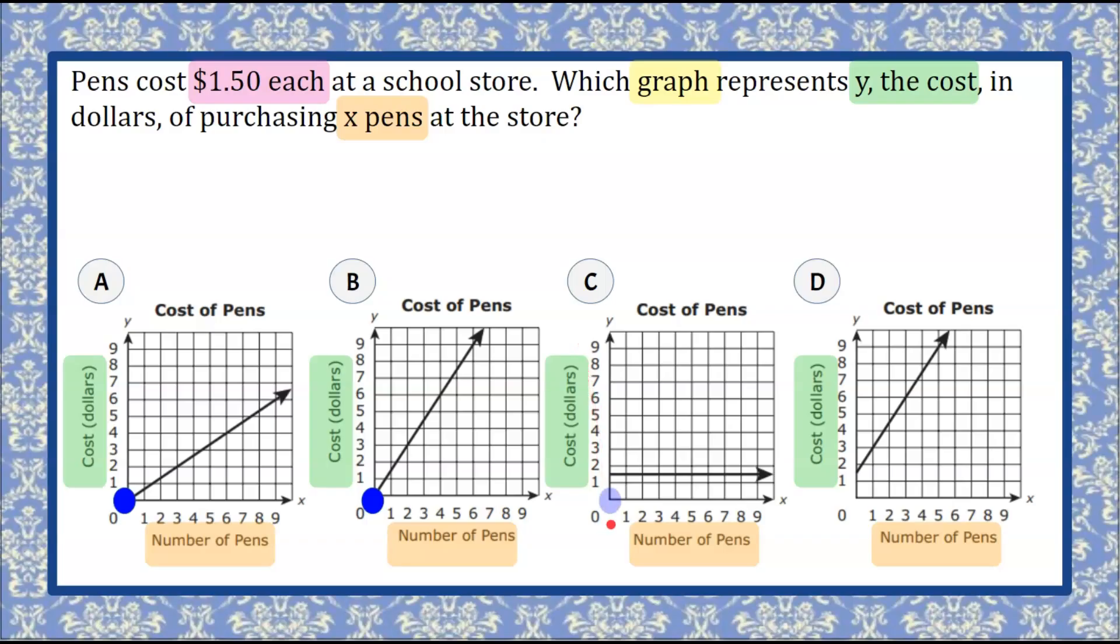For graph C, if we plot the origin, we can see that this point is not on the line. This tells us that if I buy zero pens, it's going to cost me over a dollar. So we can eliminate C, because no store is going to charge us if we don't buy anything.